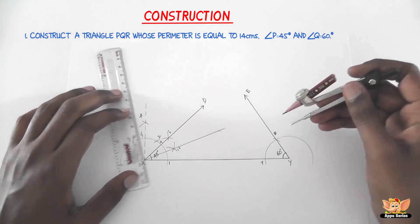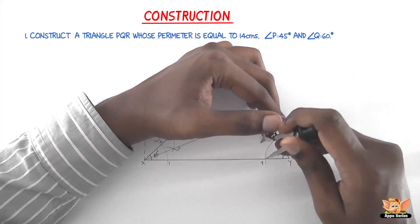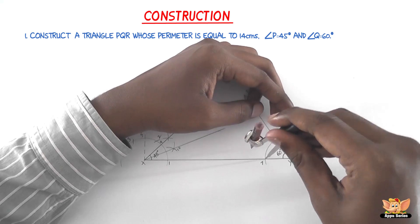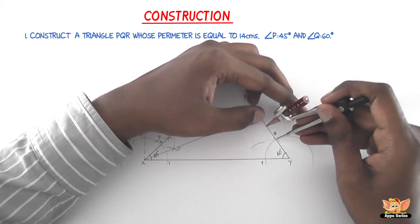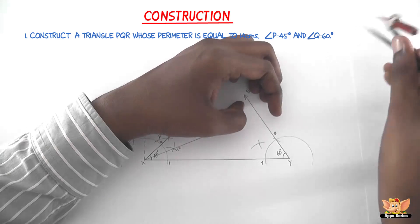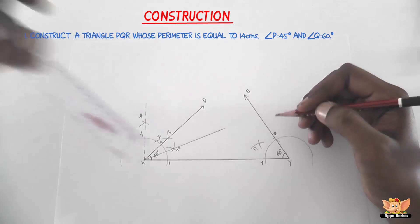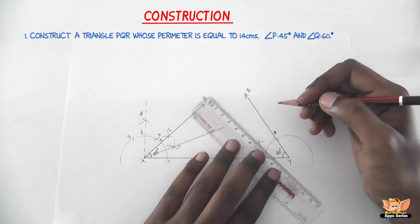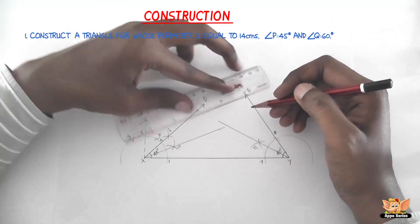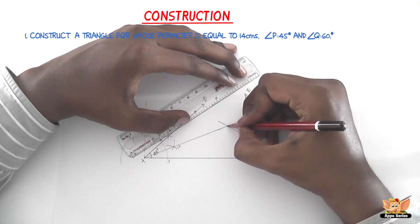Now bisect 60 degrees. With 7 as center and radius more than half of arc 7–8, draw an arc. With 8 as center and the same radius, cut the arc and name the point 11. Join Y11 and produce it such that it meets the bisector of 45 degrees. Extend the 45-degree bisector line as needed — they meet at point R.